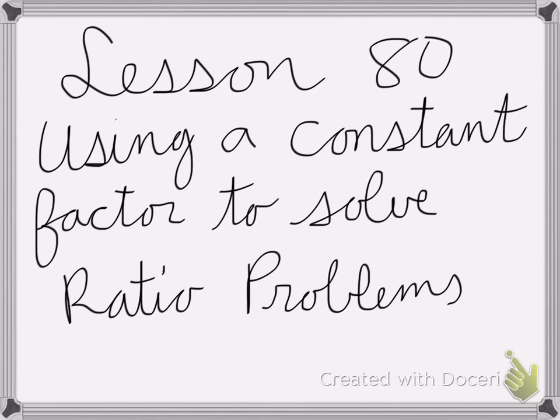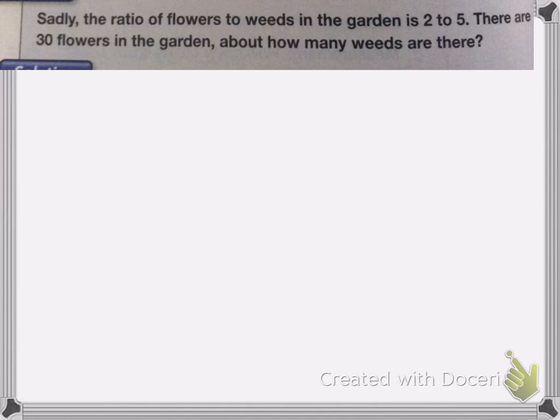So lesson 80 is on using a constant factor to solve ratio problems. So here we have the problem. Sadly, the ratio of flowers to weeds in the garden is 2 to 5. There are 30 flowers in the garden. About how many weeds are there?